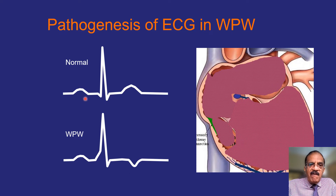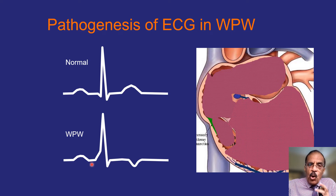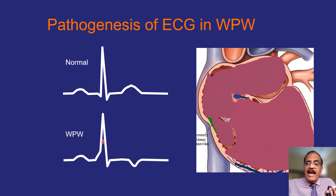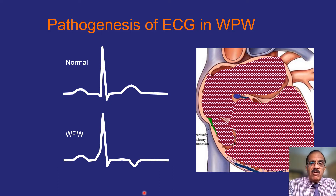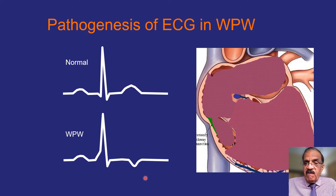The result is: a normal P wave because atrial depolarization is unaffected; a delta wave caused by depolarization through the anomalous pathway, which also widens the QRS complex and shortens the PR interval; then the AV nodal current depolarizes the rest of the ventricle normally. Since there is abnormality in depolarization, there is always corresponding abnormality in repolarization — resulting in ST depression and T wave inversion.